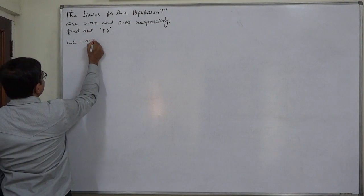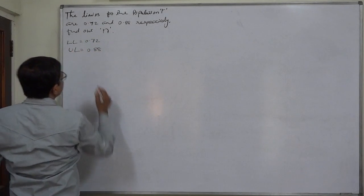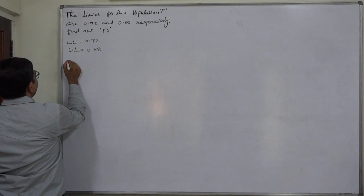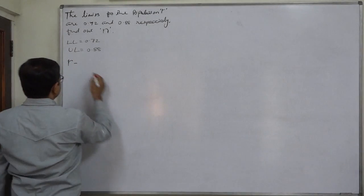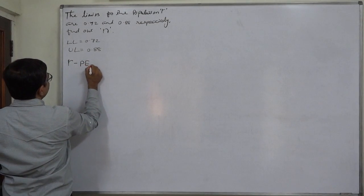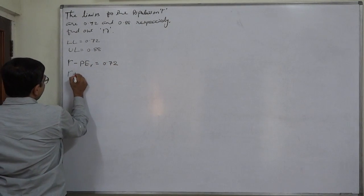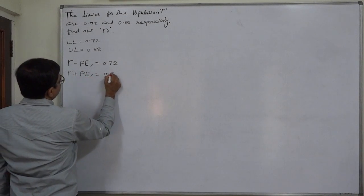Now the formula to calculate the lower limit is coefficient of correlation or sample coefficient of correlation minus probable error, that is 0.72, and sample correlation coefficient plus probable error 0.88, that is upper limit.